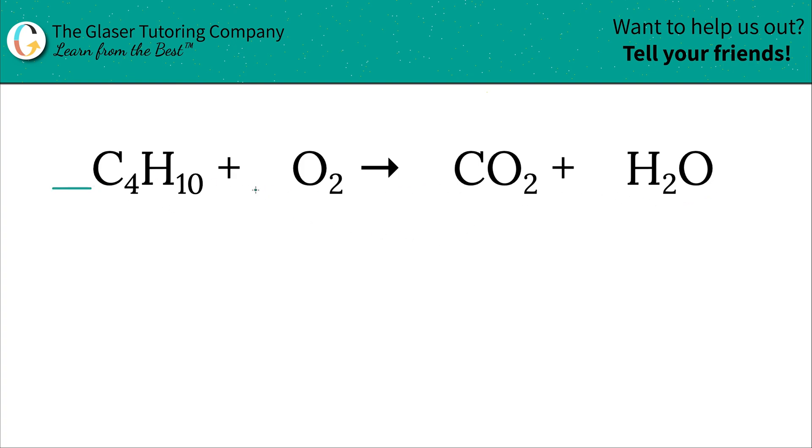Simply place in some little lines to the left of the compounds. That will represent the location of the coefficients that you're going to place in. And then next, just remember the general principle that however many atoms you have on the left-hand side of the reaction must balance however many atoms you have on the right-hand side.